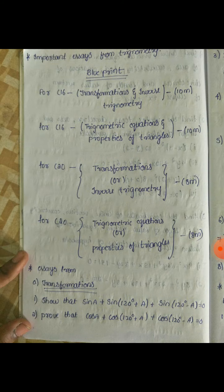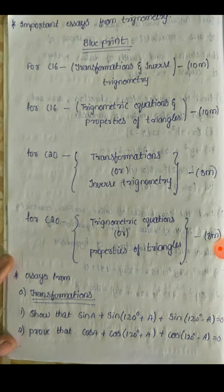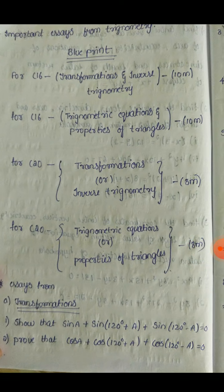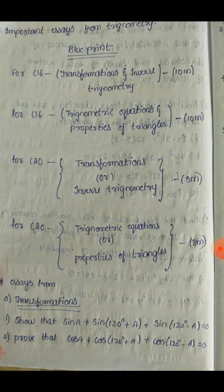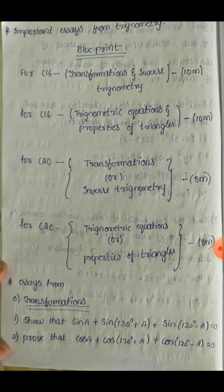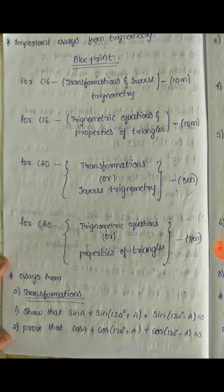Now it's trigonometry — definitely do not forget that. C16 students have transformation and inverse trigonometry. C20 students also have transformation, inverse trigonometry, trigonometric equations, and properties of trigonometry. C20 students have the advantage of preparing 4 chapters in trigonometry. For short answers, SSA involves transformations.